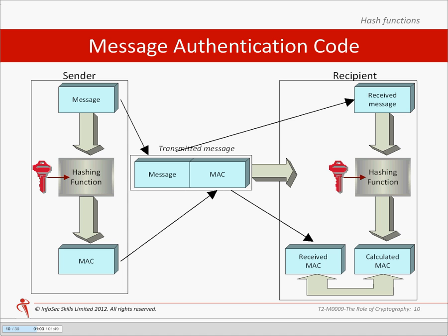MACs are predicated on the assumption that only the sender and recipient know the secret key value. This assumption allows the recipient to use the MAC function to authenticate that the sender was the originator of the message. The input data may also contain sequence numbers, random data, etc., enabling the recipient to detect replay, lost, or inserted messages. A more complex and cryptographically secure version of MAC is known as hash-based message authentication coding — that's HMAC. There are a number of internet standards produced by the IETF that describe both MAC and HMAC functions.